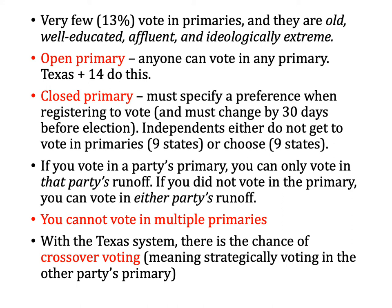If you vote in a party's primary, you can only vote in that party's runoff election. If you didn't vote in the primary, you can vote in either party's runoff. For example, in Texas, if I vote in the Republican primary and then there's a runoff in the Democratic primary, I can't vote in that Democratic runoff because I already voted in the Republican primary. However, if I missed the primary altogether and there are runoffs in both parties, I could vote in either one — just not both. You cannot vote in multiple primaries.